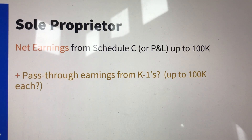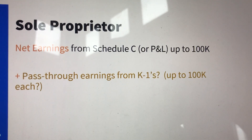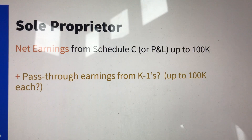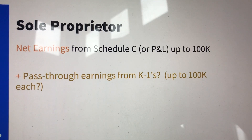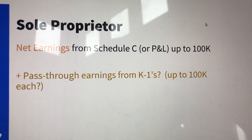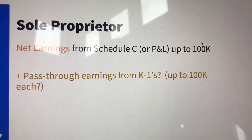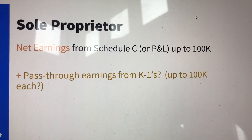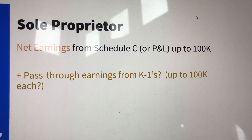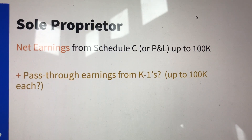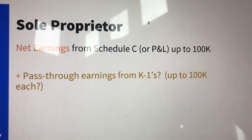It's easy. You take your net earnings from your Schedule C, or if you haven't filed your taxes yet, you take your P&L from the current year — that would be your net earnings. That's what you fill into the average monthly payroll field, and then divide it by 12. So you have your annual earnings and you still need to divide that by 12 to get your average monthly earnings.